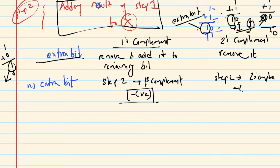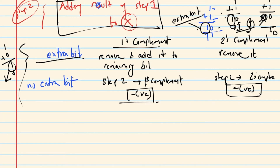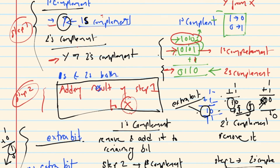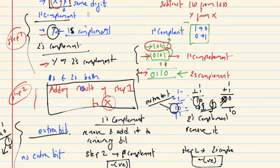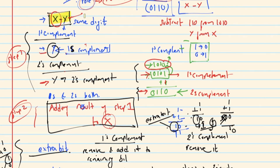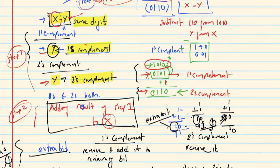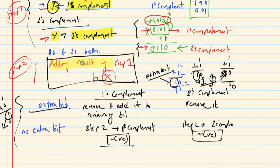What do you think? If the result has a negative sign — that is the rule. You can get the answer. When the one's complement result has no extra bit, the result is negative. The negative sign tells you that y is greater than x.